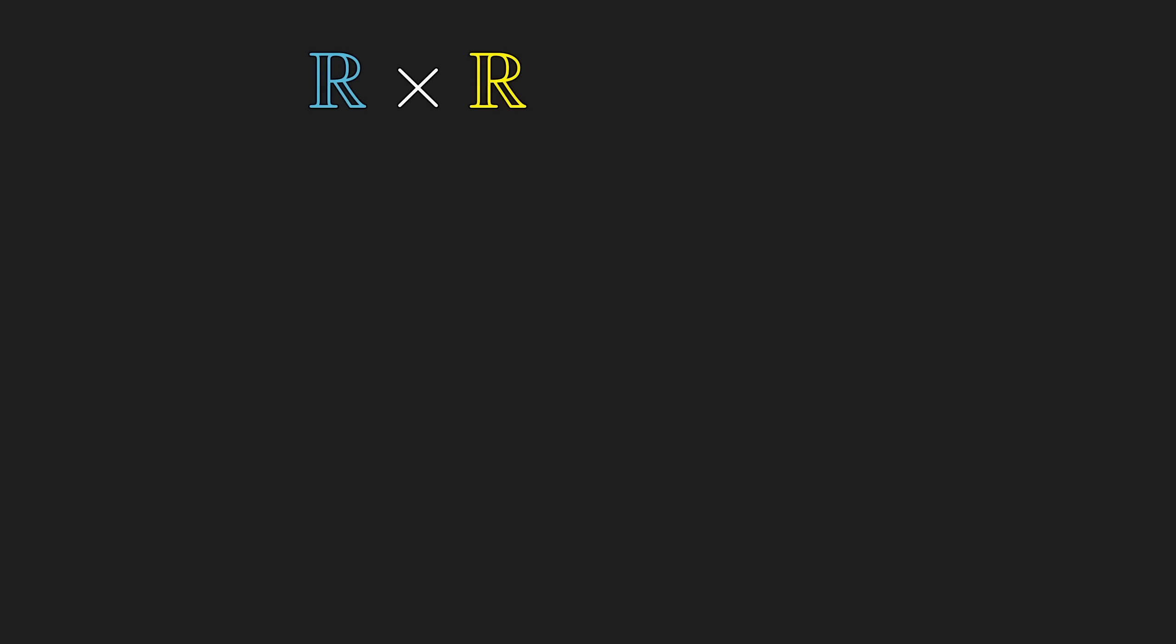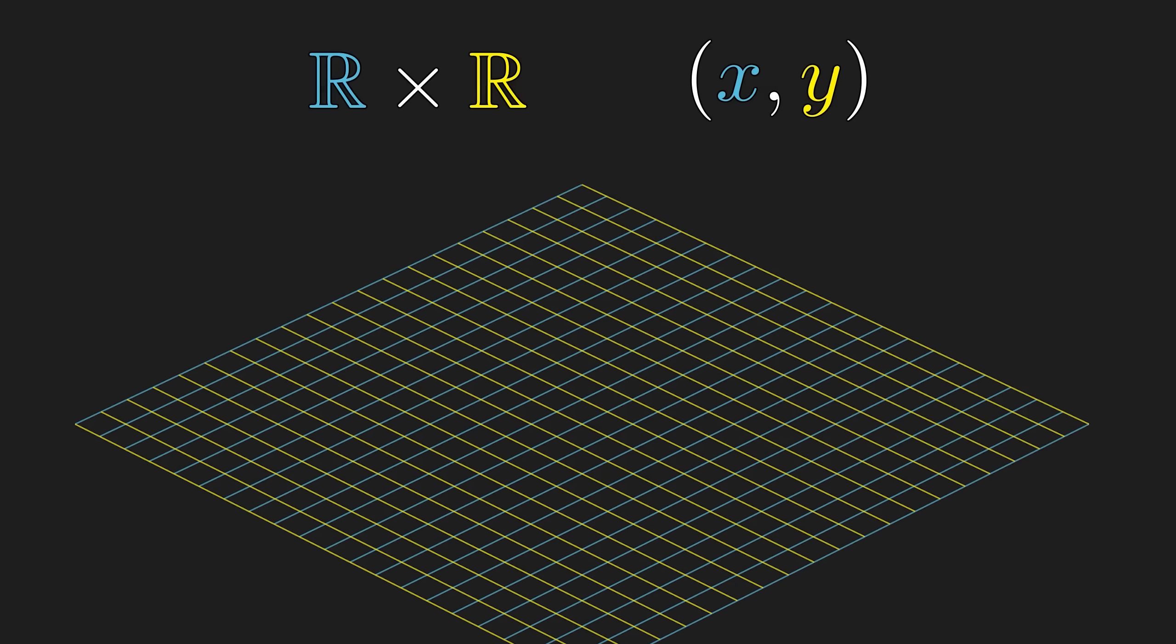To understand what in the world that is, let's start with the usual Cartesian product. This is a space where each point can be described by two coordinates, and each coordinate describes a point on a line. And the resulting product is a plane.